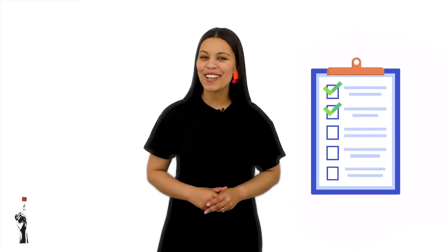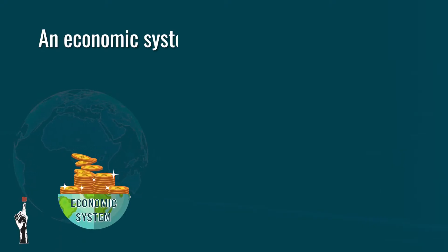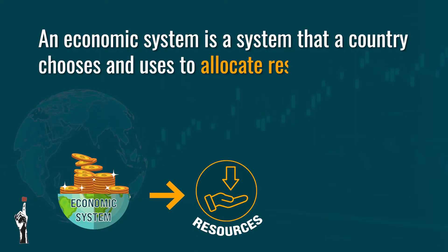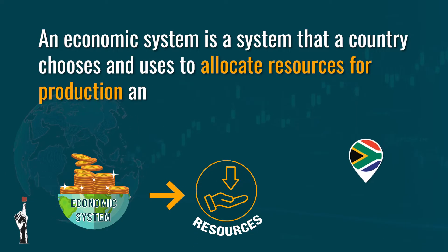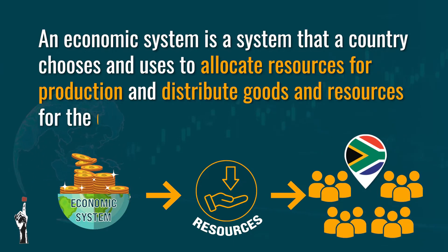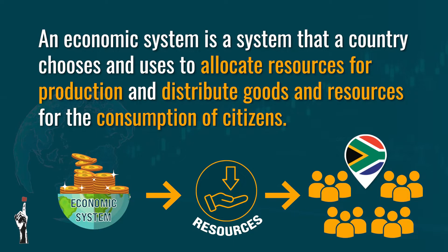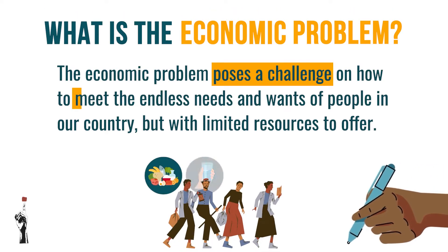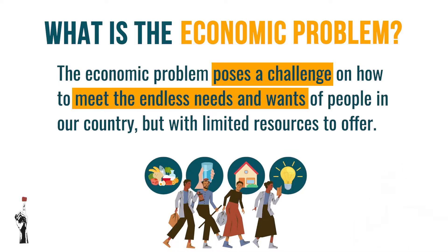Could you recall the definitions of these two terms? I'm sure you did. Let's go and have a look at them. An economic system is a system that a country chooses and uses to allocate resources for production and distribute goods and resources for the consumption of citizens. The economic problem poses a challenge on how to meet the endless needs and wants of people in our country but with limited resources to offer.